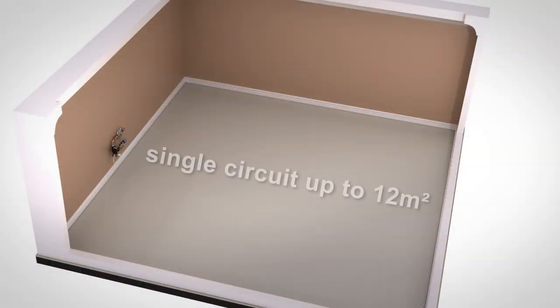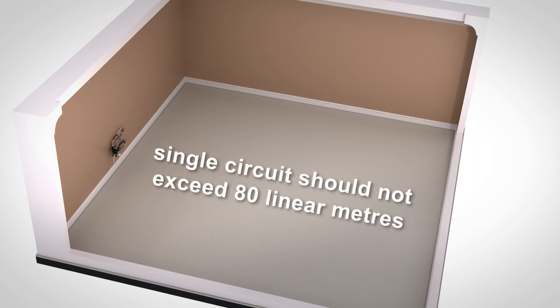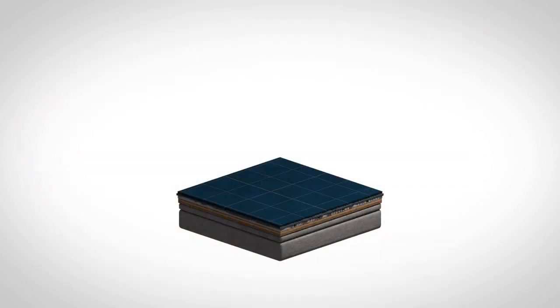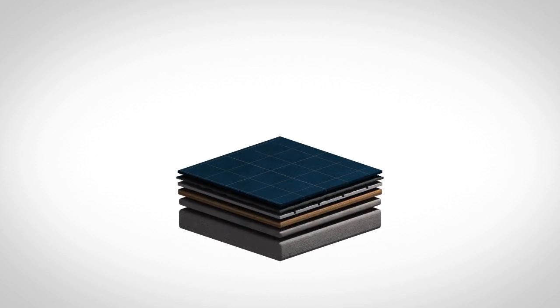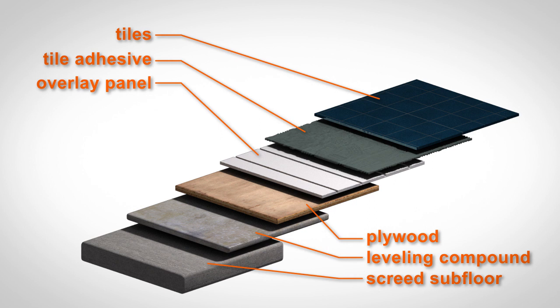A single loop circuit can cover up to 12 square metres. A room larger than this will require a manifold to allow for multiple circuits. A single circuit should not exceed 80 linear metres of pipe. Our overlay floor panels are recommended for most ceramic or stone-tiled floor coverings and they must be installed on a suitable structurally sound and level subfloor, such as plywood or solid screed.